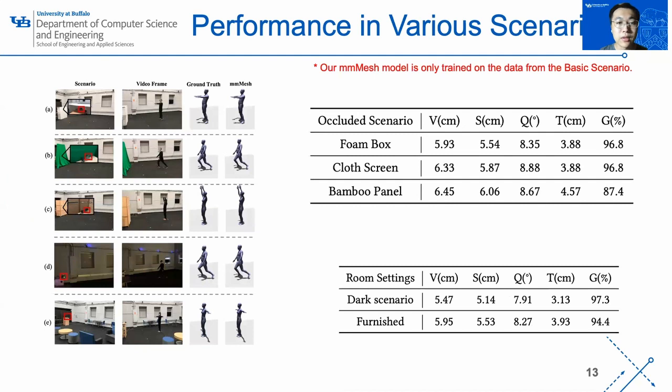To investigate the influence of the occlusion on the performance of our proposed model, we place barriers of different materials between the subject and the mmWave radar as shown in row A to row C. Note that our mmMesh is only trained on the data from the basic scenario. However, we can see our model can still generate high-quality human mesh with accurate pose and shape. Row D shows a dark scenario where the vision-based method usually has poor performance. Row E shows a furnishing scenario. These experiments also show the robustness of our model.